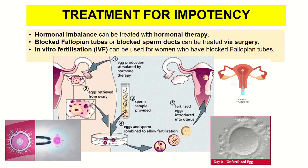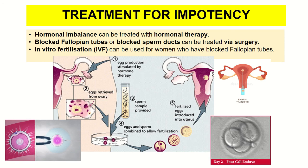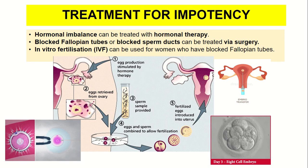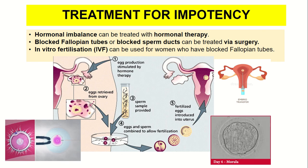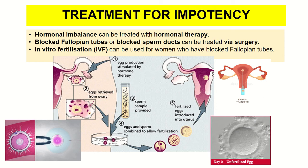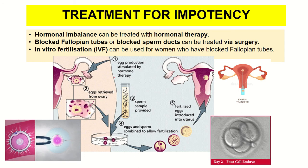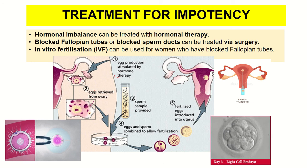These are the treatments for impotency. To overcome hormonal imbalance, hormonal therapy can be used. For blocked fallopian tubes or blocked sperm ducts, surgery can be performed. For women with blocked fallopian tubes, the problem can also be overcome via IVF — in vitro fertilization — where egg production is stimulated by hormonal therapy.